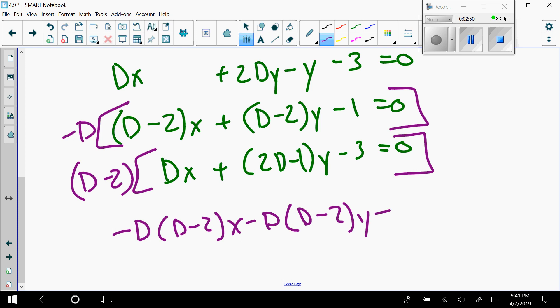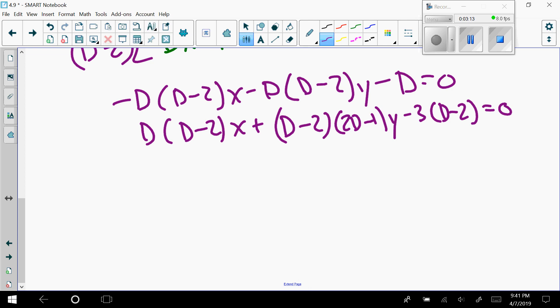y minus D equals 0. Then I have D times (D minus 2)x plus—it doesn't matter where you write them—this is (D minus 2) times (2D minus 1) with a y minus 3 times (D minus 2).